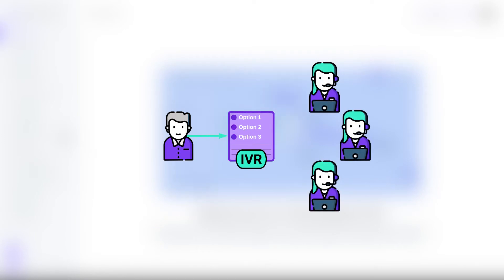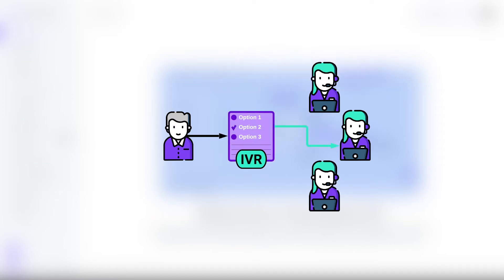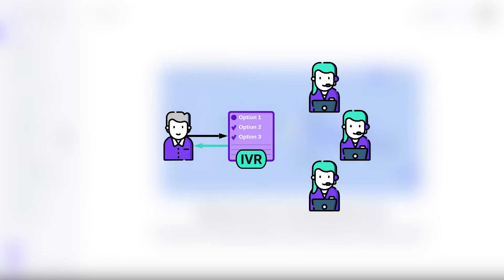IVR understands customer requests and can immediately transfer a call to the right specialists. Some frequent requests are processed by the robot without any need for human intervention. Customers don't have to wait for the answer, as the robot picks up the call immediately and starts working.